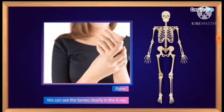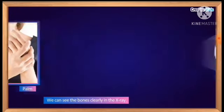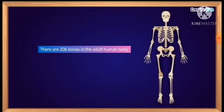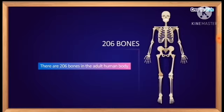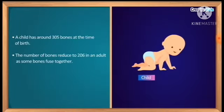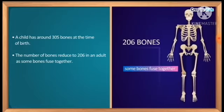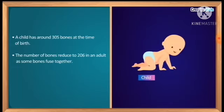By taking an X-ray we can clearly see what shape and size the bones are. You must have had an X-ray done, or at least seen one — the bones appear very clearly. We can find out their size and shape. In an adult human being, 206 bones are present. When a child is born, it has around 305 to 306 bones. But as the child grows into an adult, some bones fuse together, so the number of bones reduces to 206 in an adult.